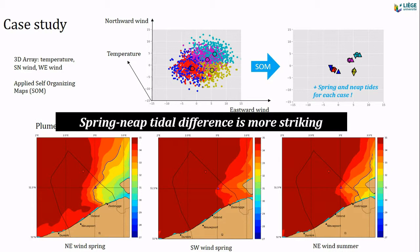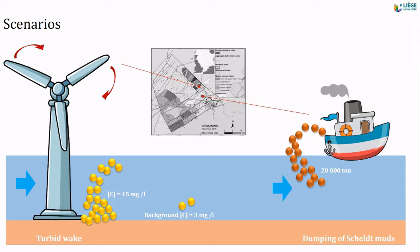Here we test two scenarios. The first scenario is a wind turbine which is operating — it stresses the sediments, and the sediments rise and are removed by tidal currents. The concentration of sediments near the bottom is 15 mg per litre during spring tide, which is five times bigger than the background concentration of 3 mg per litre. We placed one wind turbine at Belwind. We also dumped 20,000 tons of dredged mud into the dumping site B1. Those are the two scenarios.